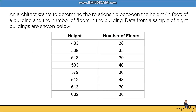Let's try an example. An architect wants to determine the relationship between the height in feet of a building and the number of floors. Data from a sample of eight buildings are given. We have the height and the number of floors. We need to write our hypotheses, solve for r and the p-value, and write our conclusions.